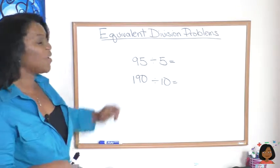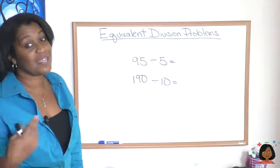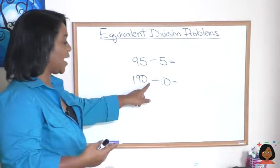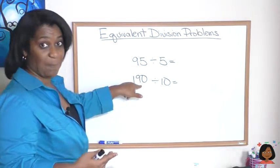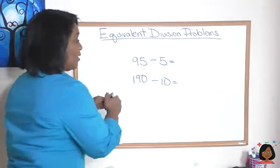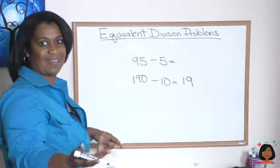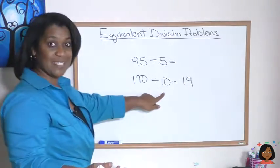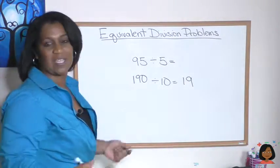Well, I'm going to say that the second one is easier to do, because we know that anything divided by 10, we can just drop that last zero, and here we know this answer is going to be 19. Think about it in reverse. 19 times 10, we add the zero, is 190.